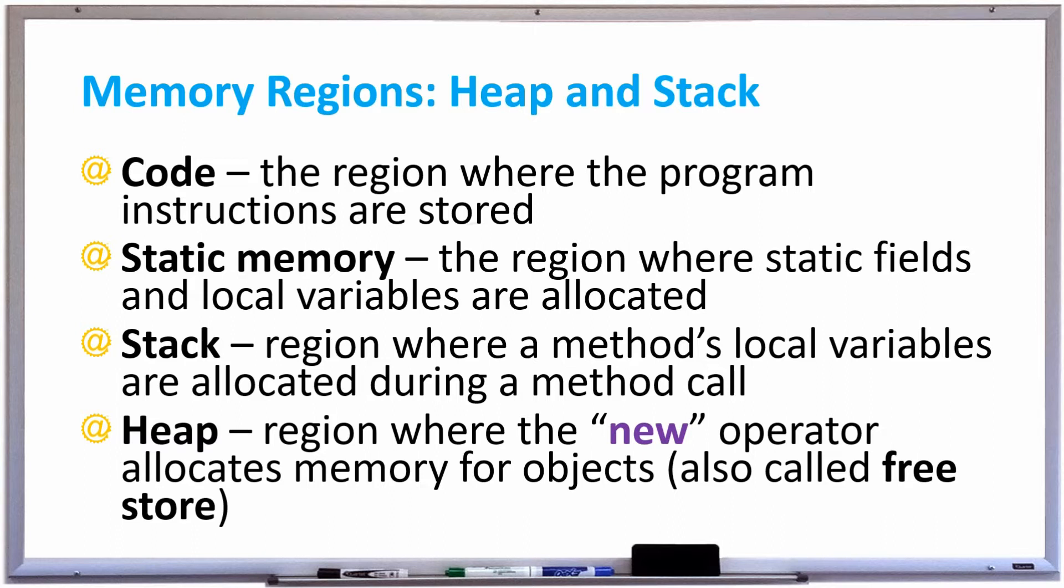First one is the code. This is the region where the program instructions are stored, meaning all the code that you type, the source code, and it's stored in a .java file, and that's usually on your computer's hard drive, so that's one region of memory.